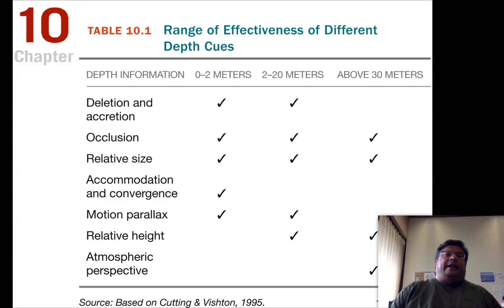This is a very handy little chart because what it does is it gives you an idea of where different depth cues are most effective. So, up close, so zero to two meters away, we use deletion and accretion, occlusion, relative size, accommodation, convergence, motion parallax, and relative height. Notice that from two to twenty meters away, which is roughly six to sixty feet away roughly, notice that accommodation and convergence don't work very well. In other words, measuring how much our eyes are crossing.